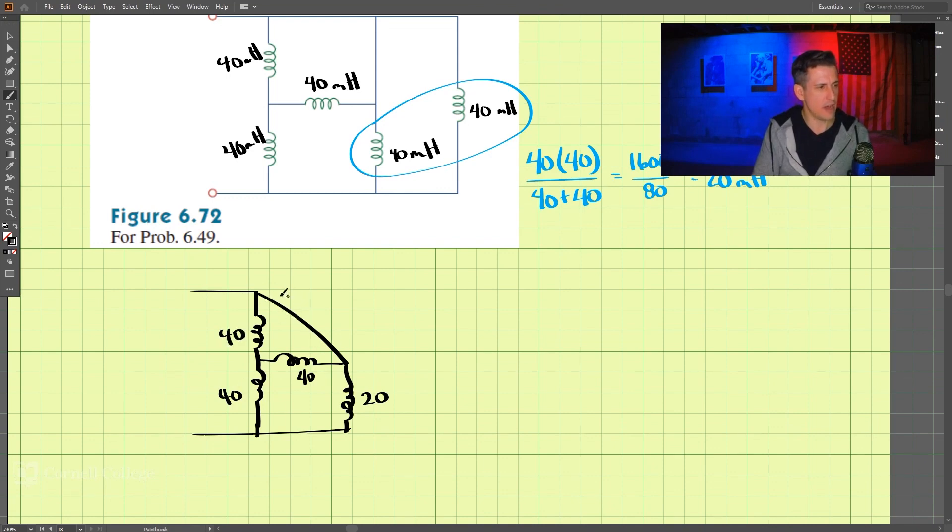So can we identify other ones? Well to me it looks like these two are in parallel, this side's connected to this side. So I would say they're in parallel, and so that's the same as this, so those come out to 20 millihenry. And so redrawing the circuit.